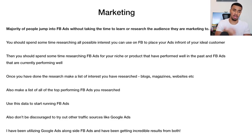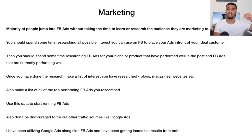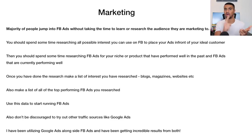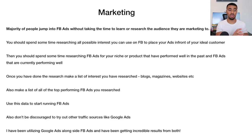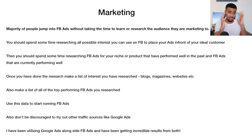From there, spend time researching Facebook ads for your niche or products that have performed well in the past and are currently performing well. You can learn a lot from top-performing ads — what kind of video they used, what copy, what call to action. To find them, go on Facebook, use the search bar, type in your niche or specific product, and filter ads by year to see engagement and video views. Make a list of the interests you researched and top-performing ads so you always have a base to work from.